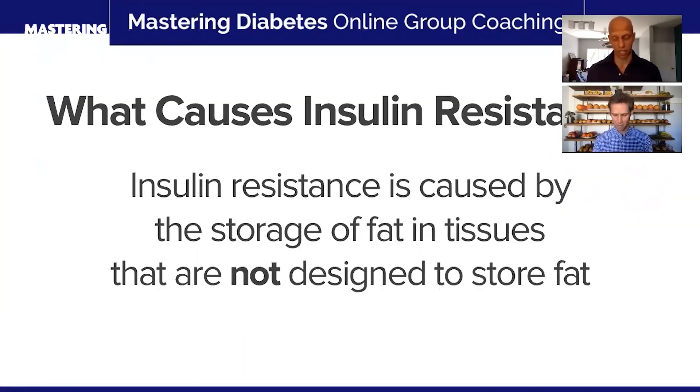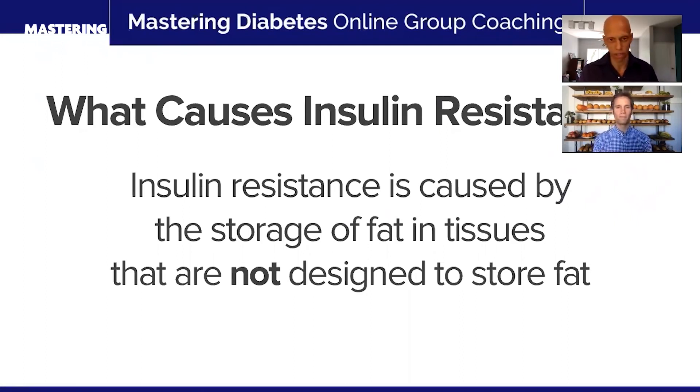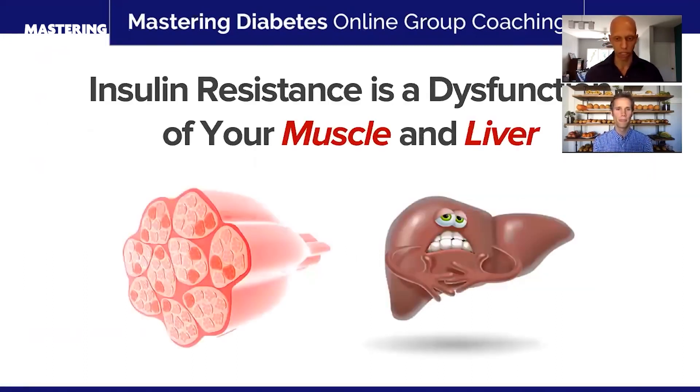You studied your entire PhD on the causes of insulin resistance. Can you tell our viewers what insulin resistance is and what causes it in the first place? When it comes to understanding insulin resistance, it's very important to understand that insulin resistance is the root cause of all blood glucose variability — whether we're referring to people with type 1, prediabetes, type 2 diabetes, or gestational diabetes. Insulin resistance is caused by the storage of excess fat in tissues that are not designed to store fat. Let me walk you through these slides so that you really understand exactly what I'm talking about.